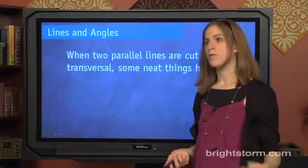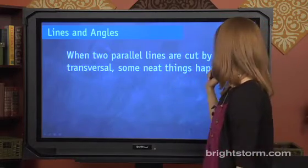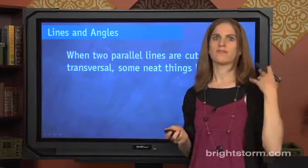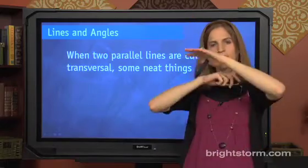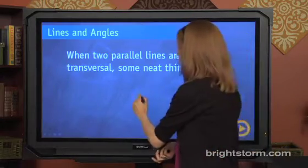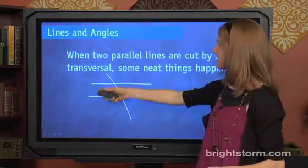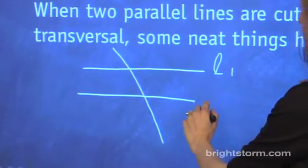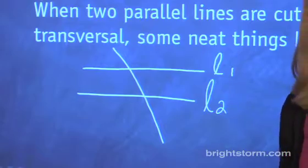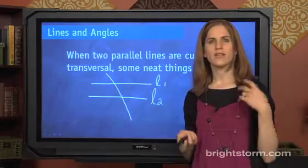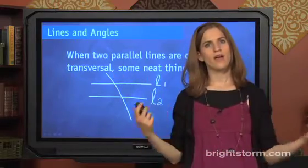Onto one of my favorite topics with lines and angles. When two parallel lines are cut by a transversal, some really neat things happen. You might be thinking — transversal? All a transversal is, is just a line cutting through two parallel lines. You've seen this before: you've got two parallel lines and a line that goes through them. When you see something like this, there are some really cool things you can infer about the angles. As long as you have one angle measurement, you can find all of them.